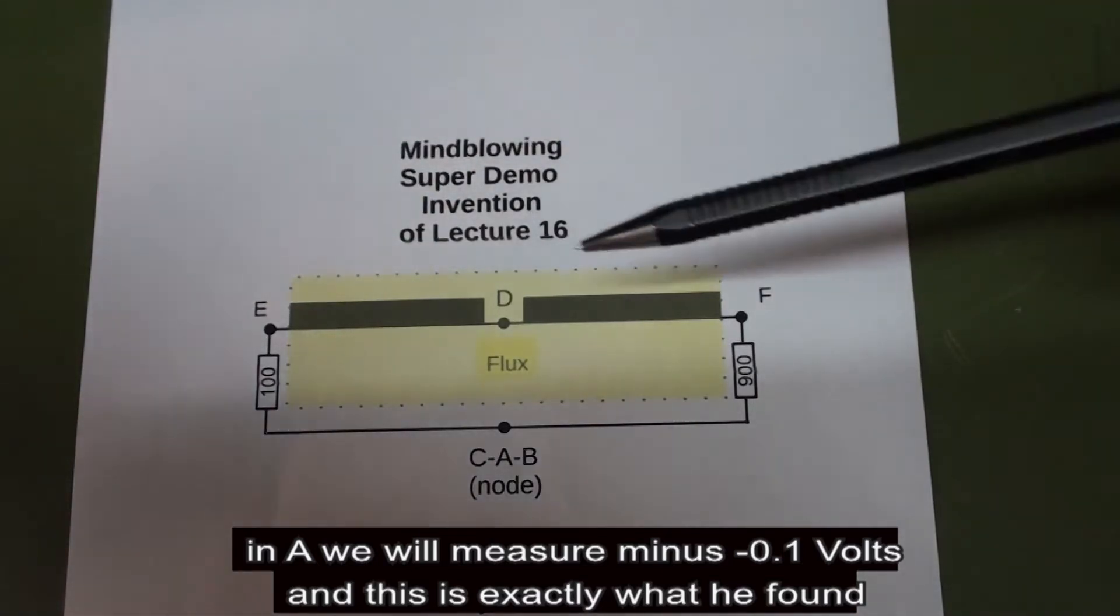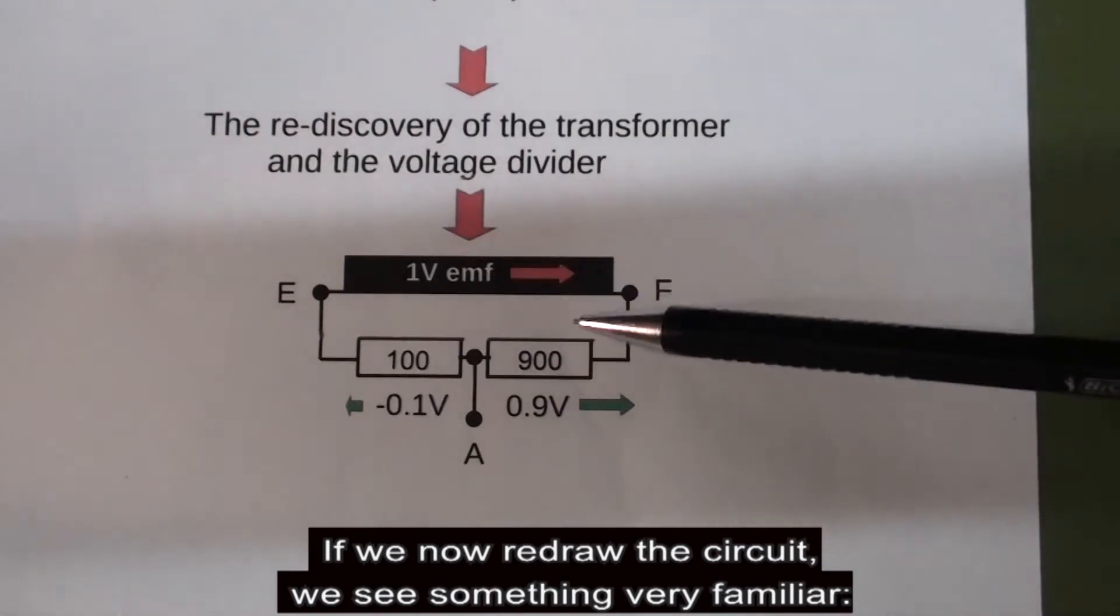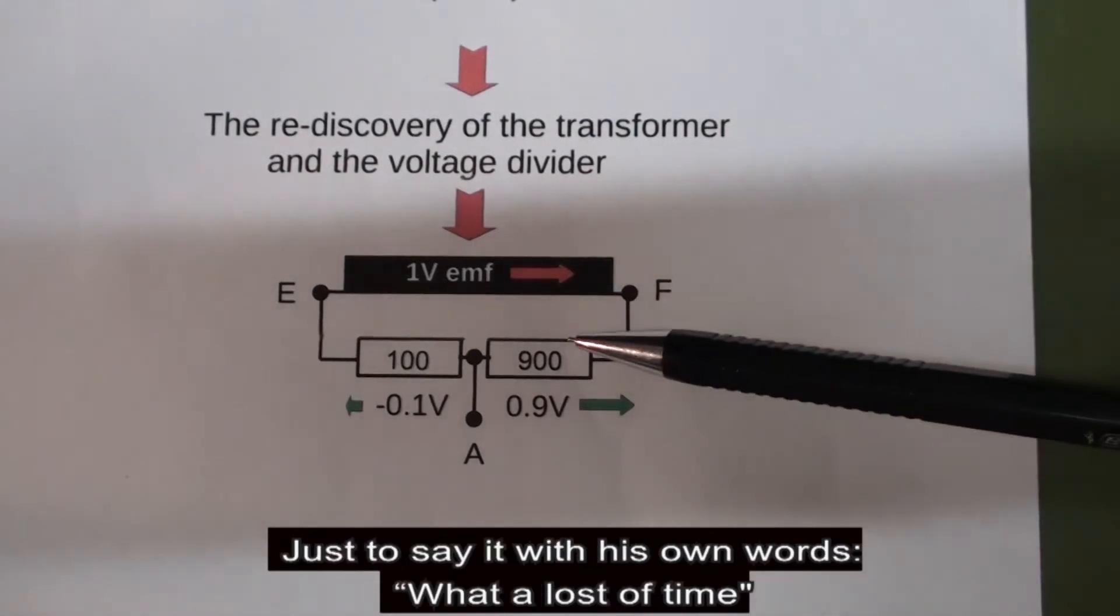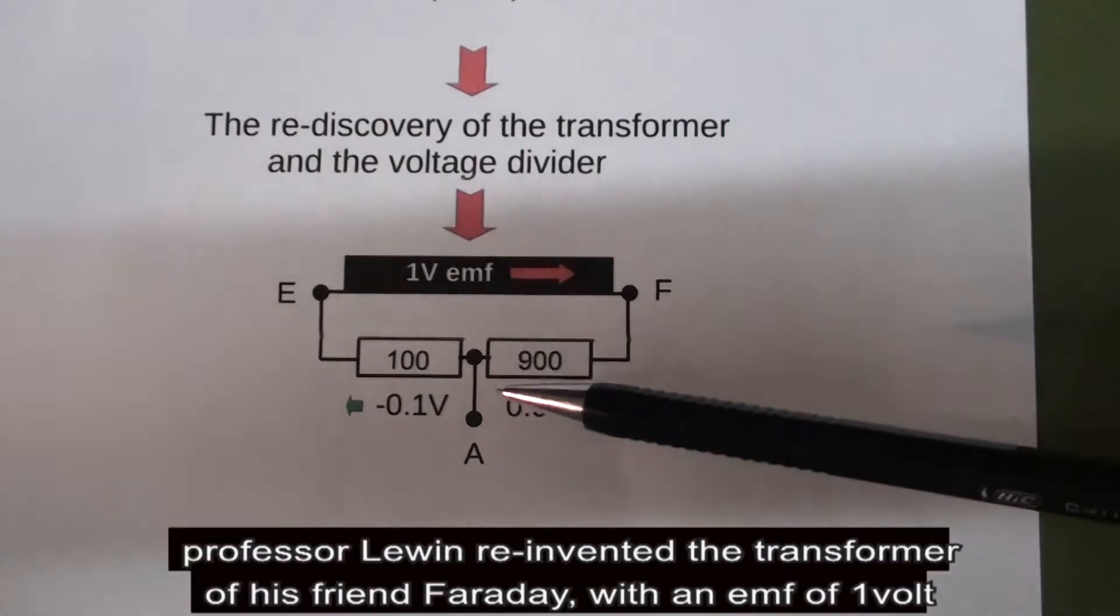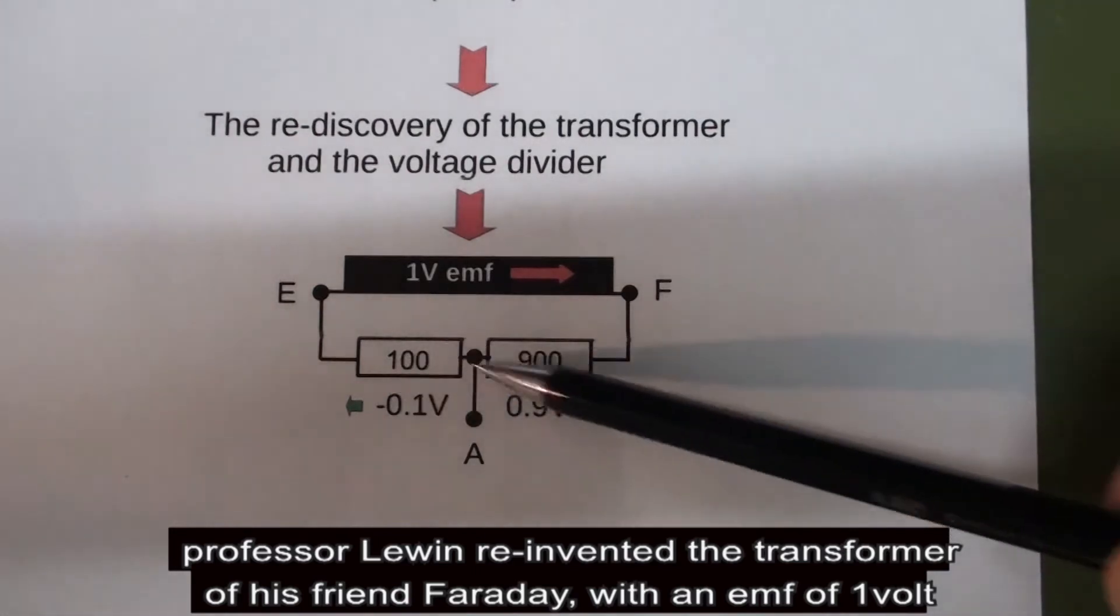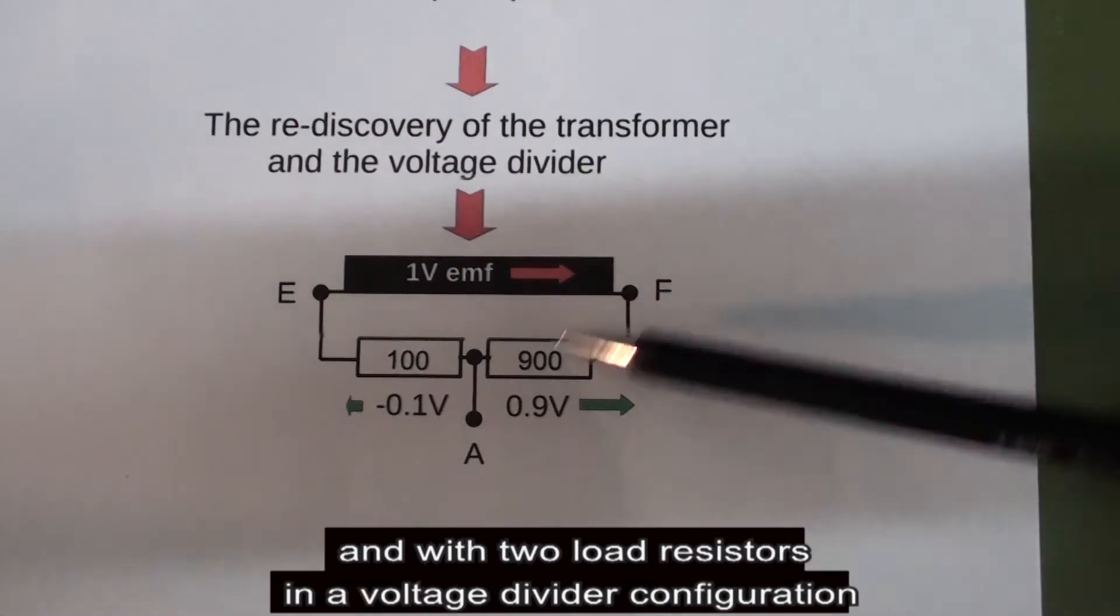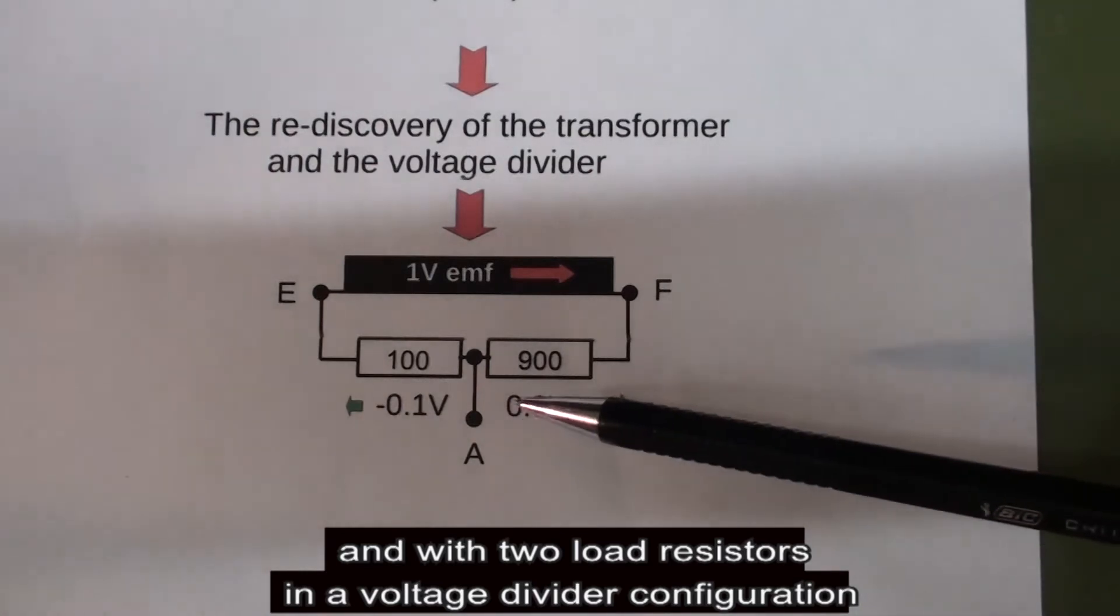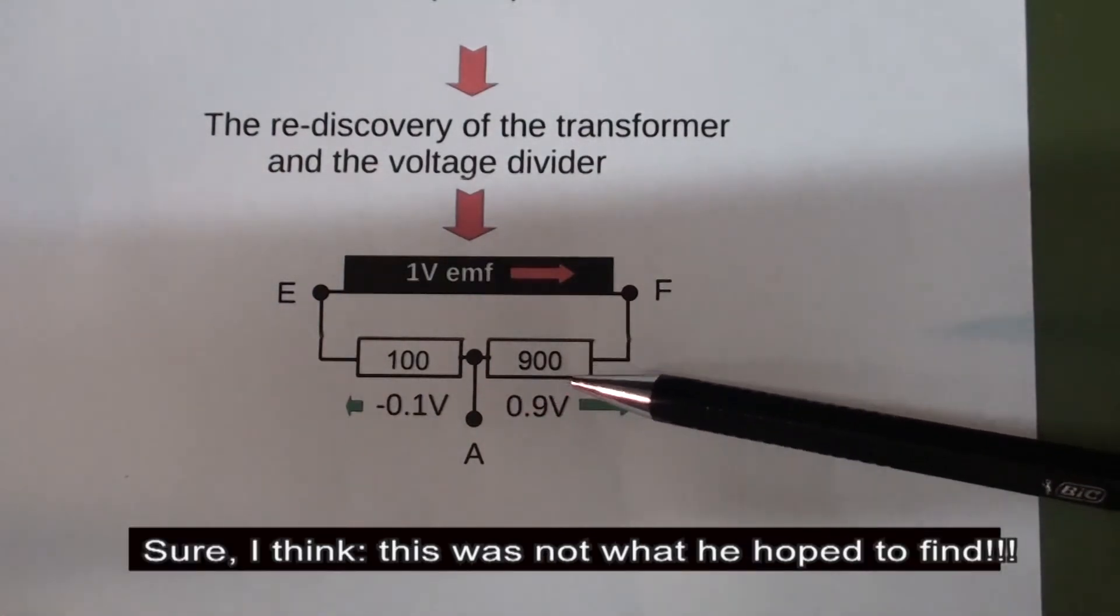And this is exactly what he found. If we now redraw the circuit, we see something very familiar. Just to say it with his own words, what a loss of time. Professor Lewin reinvented the transformer of his friend Faraday, with an EMF of 1 volt and with 2 load resistors in a voltage divider configuration. I'm sure this was not what he hoped to find.